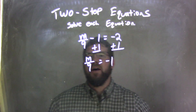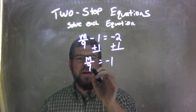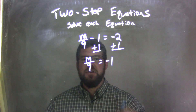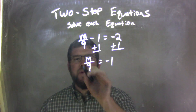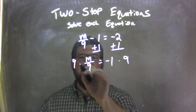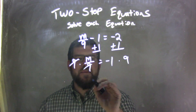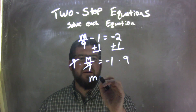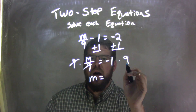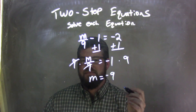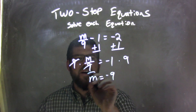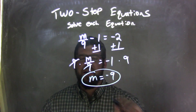Now I have divided by 9 — m over 9 is divided by 9. The opposite of division is multiplication. So multiply 9 to both sides, and that leaves me with m equals negative 1 times 9, which is negative 9. That's it. That's my final answer here. m equals negative 9.